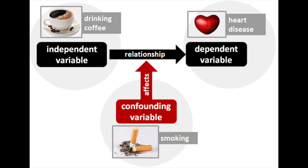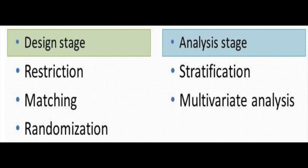Examples of confounders include observed associations between coffee drinking and heart attack, where smoking can be a confounding factor. Demographics such as age or gender, and risk factors such as body mass index or smoking, can usually result in confounding.